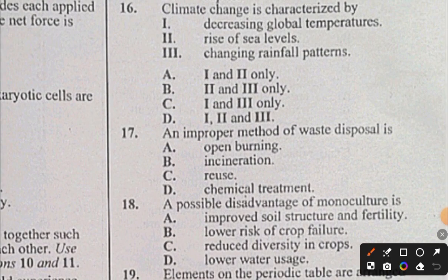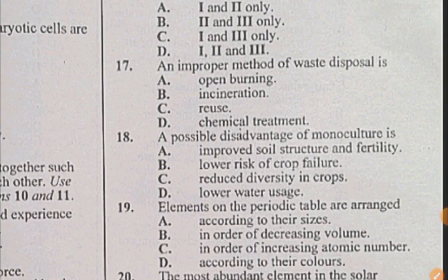Question 17: An improper method of waste disposal is: A) open burning, B) sterilization, C) reuse, D) chemical treatment. Question 17 is A, open burning. Question 18: A possible disadvantage of monoculture is: A) improved soil structure and fertility, B) lower risk of crop failure, C) reduced diversity in crops, D) lower water usage. The answer to question 18 is C, reduced diversity in crops.